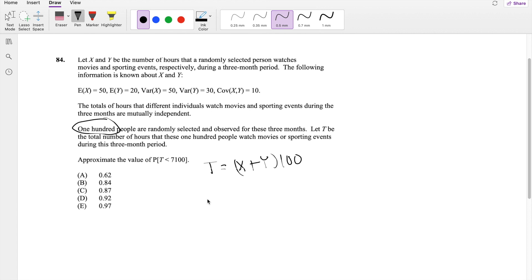But we can first find the mean of X plus Y, or mean of T. Mean of T is equal to 50 plus 20, which is equal to 70. But for mean of T star, where T star is for 100 people, this is equal to 70 times 100. And we're allowed to just do this because they say this is independent. So this is equal to 7,000.